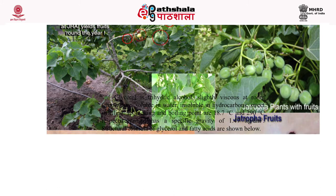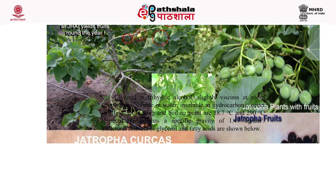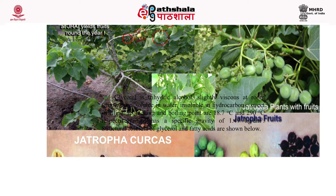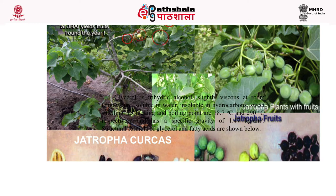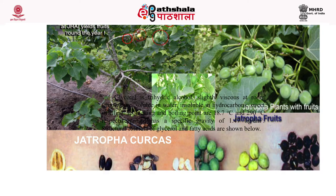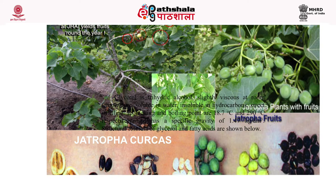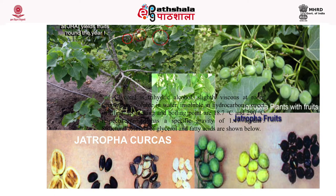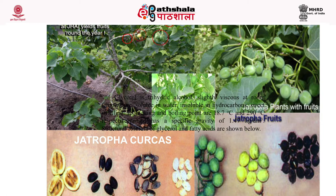The picture shows the fruits of jatropha. Each fruit has three seeds. The seeds can be dehusked and the kernel is obtained, which can be further processed for the production of jatropha oil.